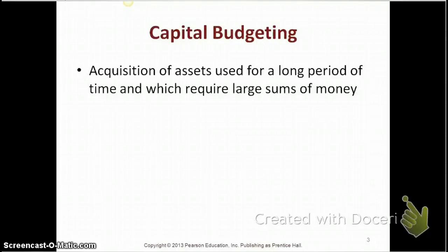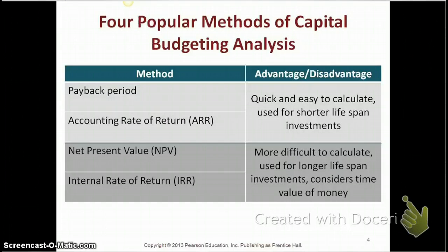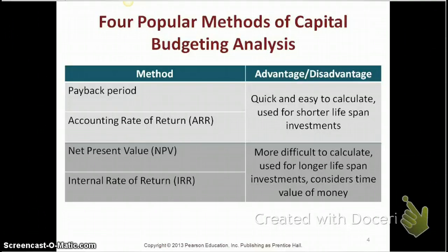Those are typically the ones shown as long-term assets on your balance sheet. Whenever we make capital budgeting decisions, we use four methods of analyzing those decisions. Payback period and accounting rate of return are quick and easy to calculate, and typically we use them for shorter lifespan investments.